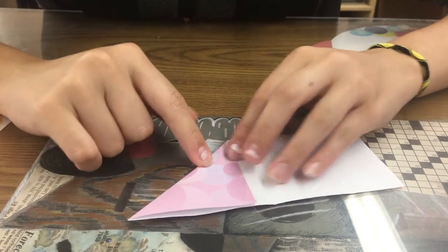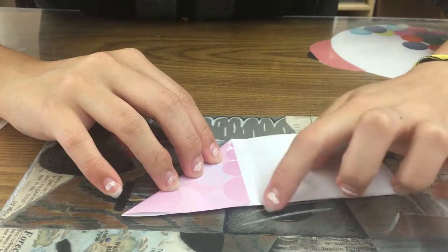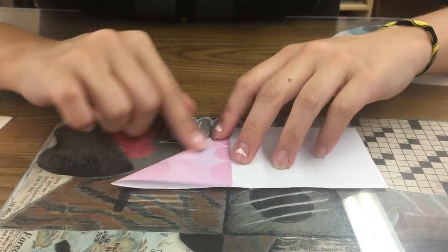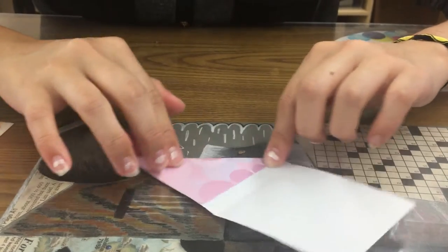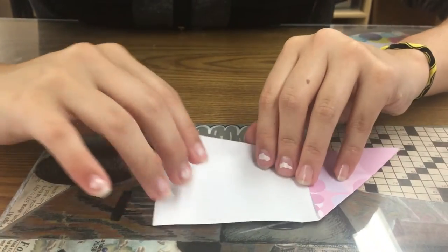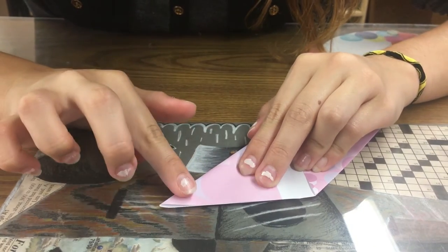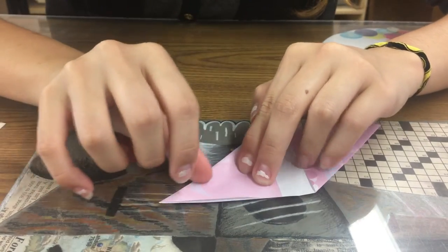this corner is very nice and crisp. This side is not going to end up touching your middle crease and that's okay, you don't want it to touch. So you're going to do the same thing on the other side.